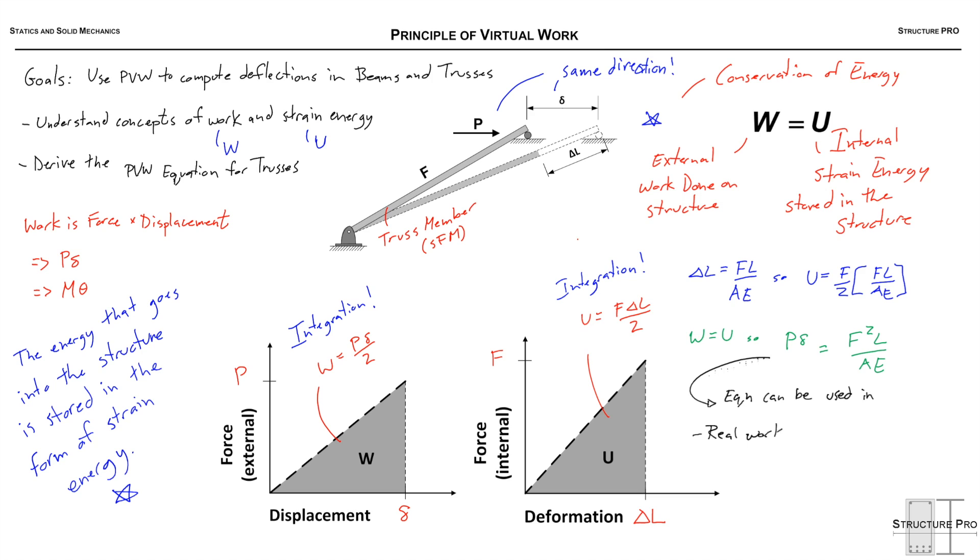It can be used in the real work method and also it's used in Castigliano's theorem. So these are both energy methods that we can use to compute displacements, but neither of them are really as good as the virtual work method and that's why we're learning this. It's very powerful.